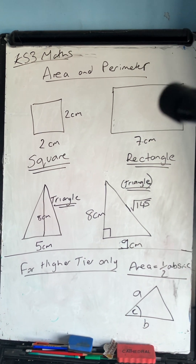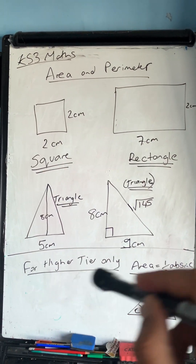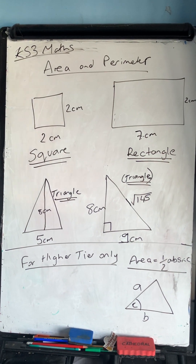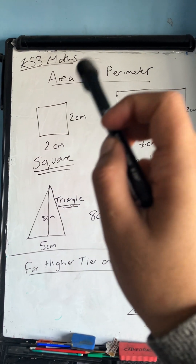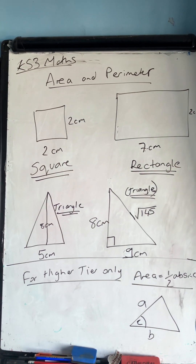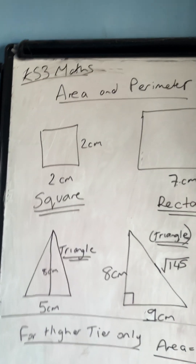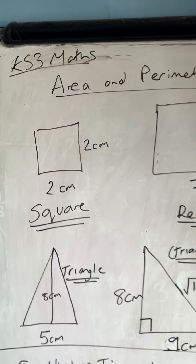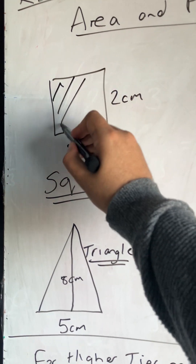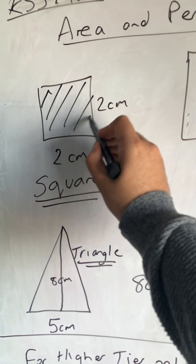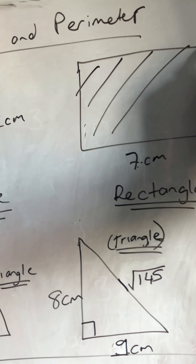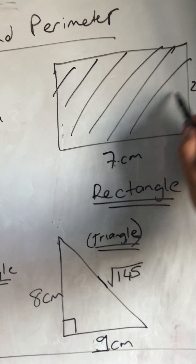Now looking at area. Area is how much space a shape covers — think of it as how much you'd need to fill in. The area is how much space it actually takes up.